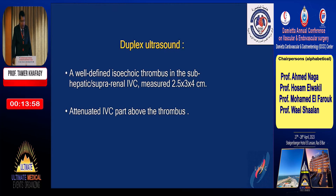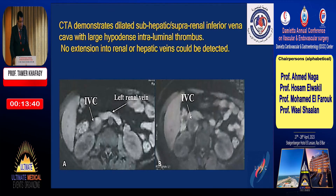Duplex ultrasound defined a high isoechoic thrombus in the sub-hepatic, suprarenal inferior vena cava. CT angiography revealed a large hypodense intraluminal thrombus with no extension into the renal or hepatic veins detectable on CTA.